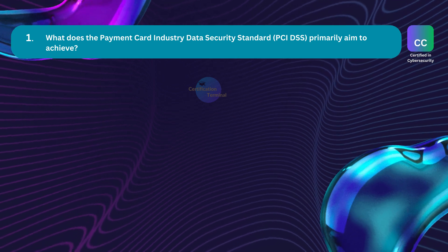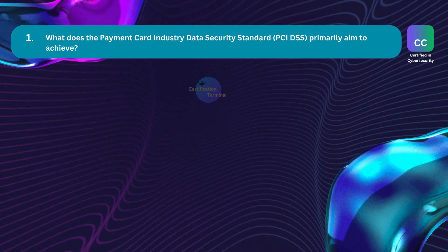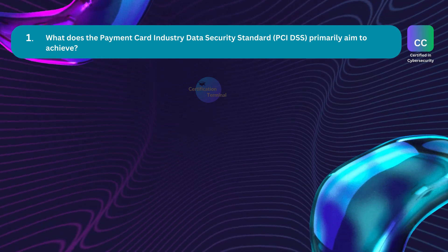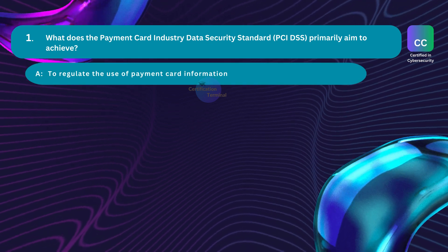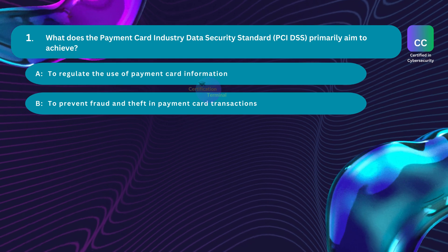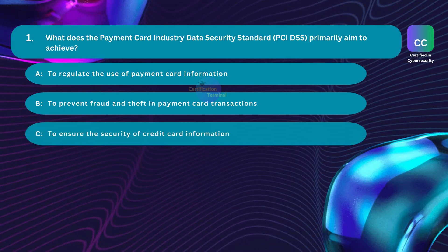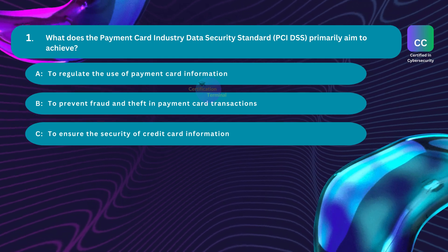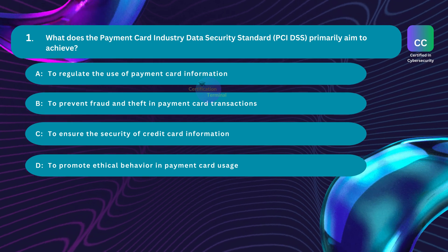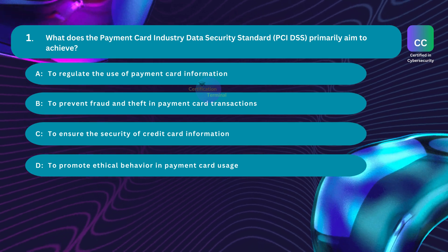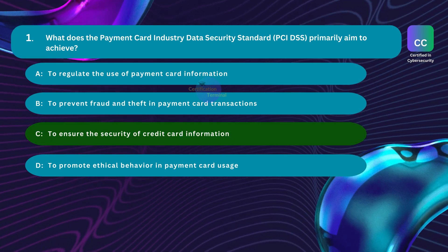Question number one: What does the Payment Card Industry Data Security Standard (PCI DSS) primarily aim to achieve? Option A: to regulate the use of payment card information. Option B: to prevent fraud and theft in payment card transactions. Option C: to ensure the security of credit card information. Option D: to promote ethical behavior in payment card usage. The correct answer is Option C: to ensure the security of credit card information.